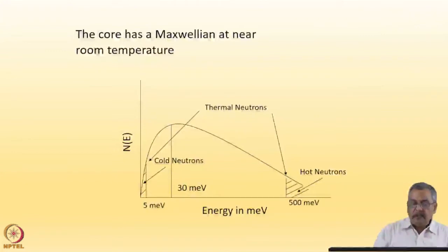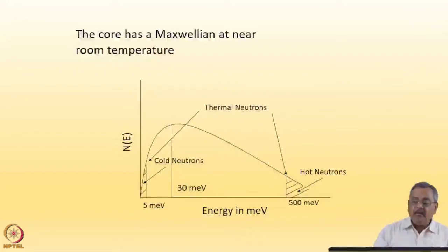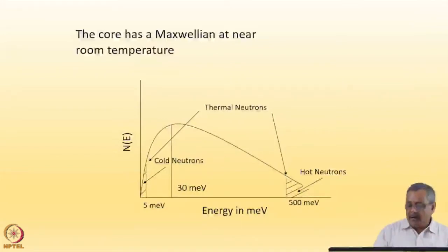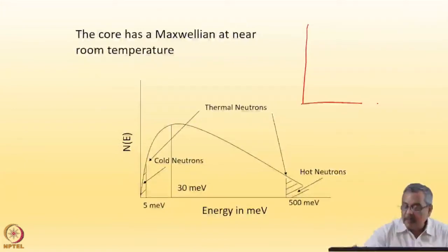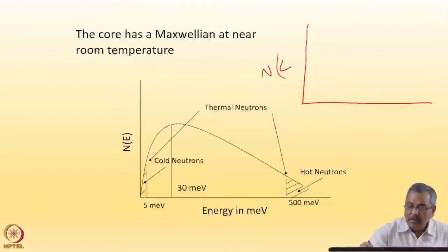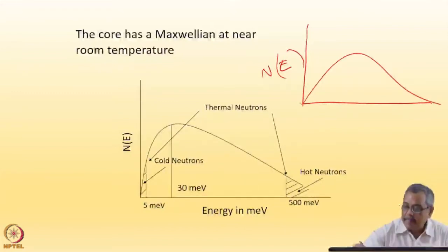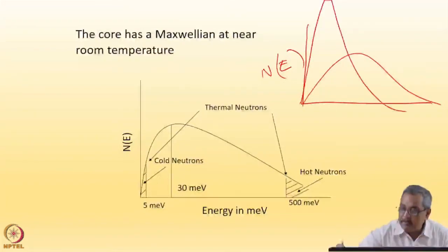Again, the core, or in this case the spallation target, once moderated, has a Maxwellian spectrum at near room temperature or at lower temperatures using cold neutrons. The role of cold neutrons is to re-moderate neutrons from the thermal to low energies.